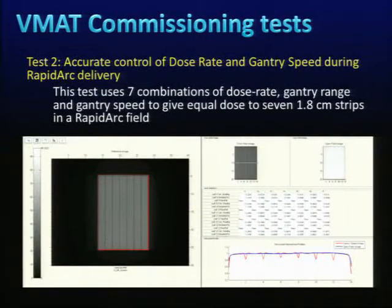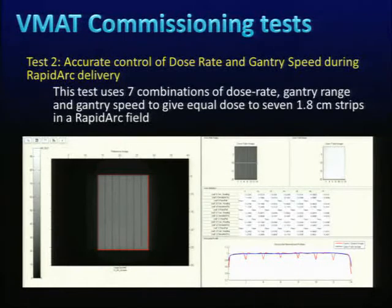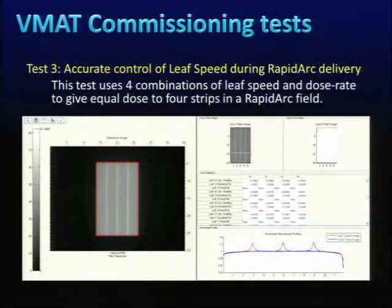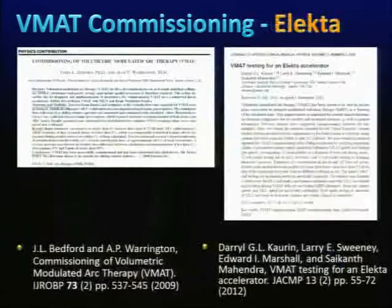The next test involves seven combinations of dose rate and gantry speed. Seven strips are normalized to the open field — the blue represents the open field and the red profile shows the seven combinations. Our tolerance was 2%, and all seven combinations passed. Similarly, for leaf speed combined with dose rate changes, four combinations were compared to the open field and passed within 2%.